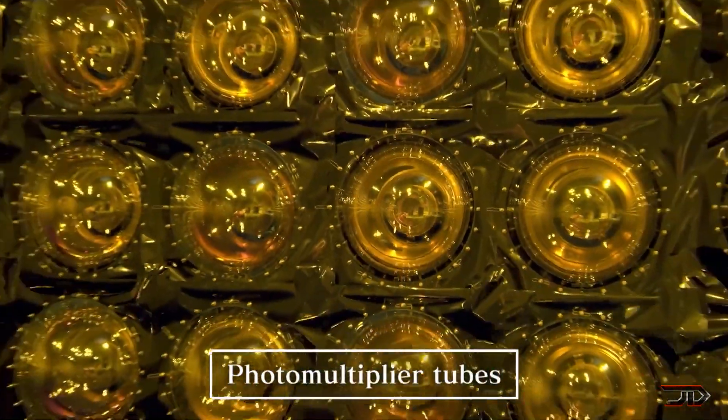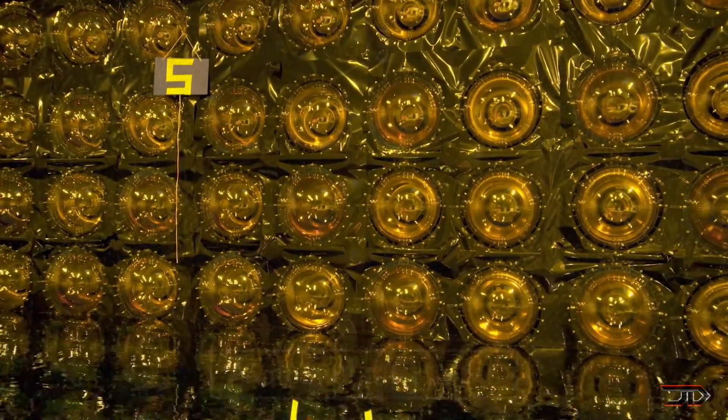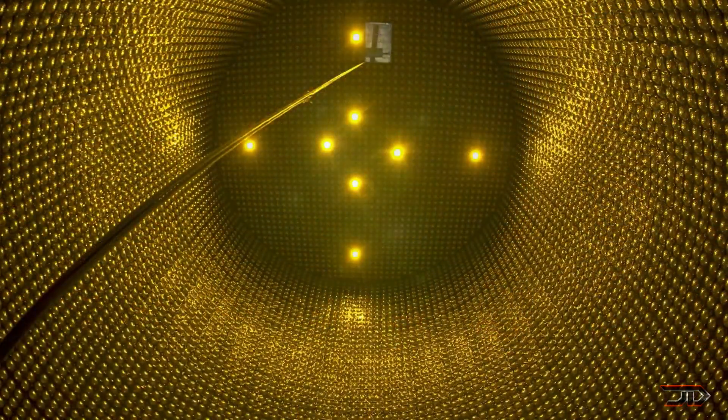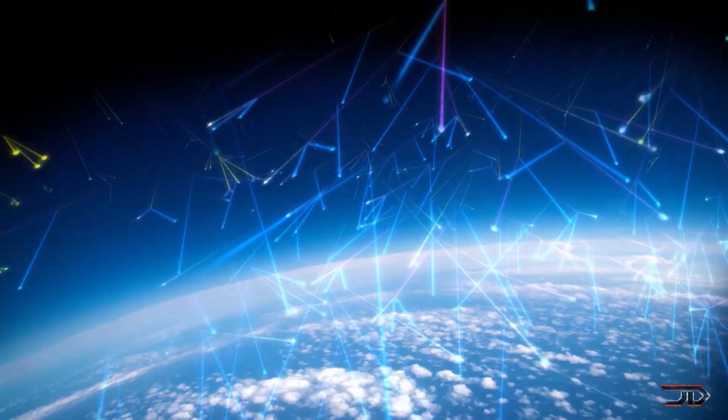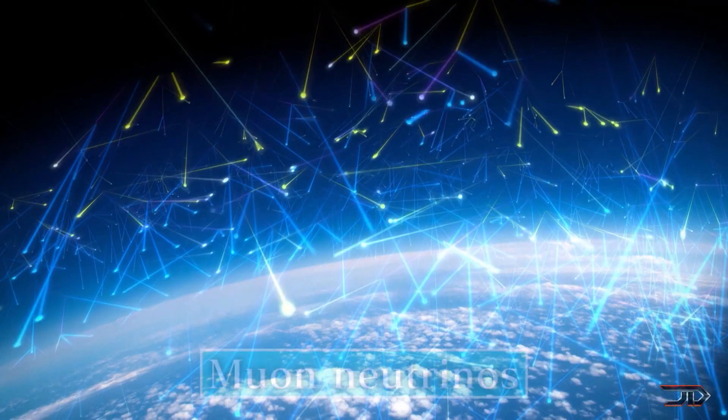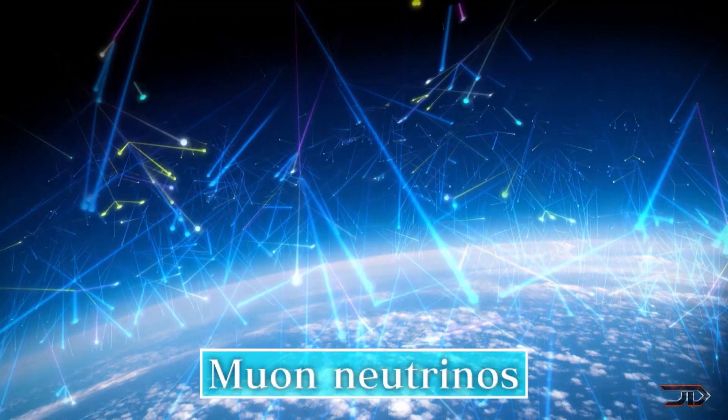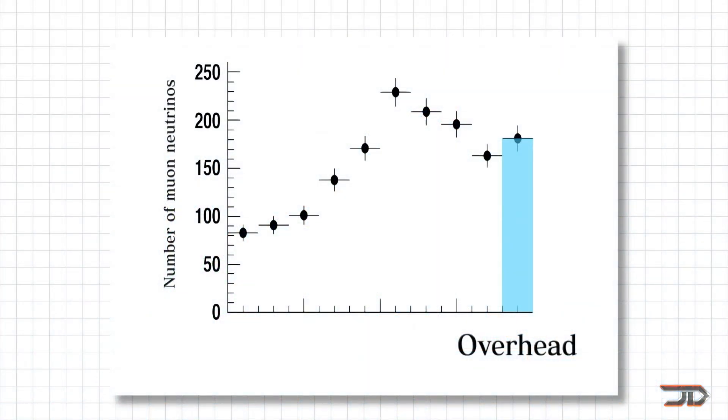The tank is surrounded by photomultiplier tubes, which detect neutrino interactions with electrons, which actually move faster than light in water. This creates what is called Cherenkov radiation, and the tubes read the direction and energy of the neutrino.